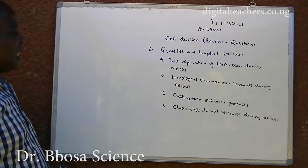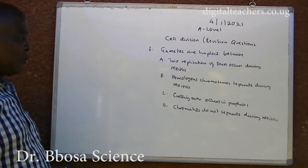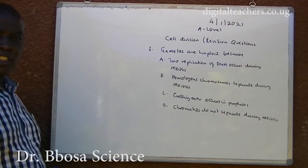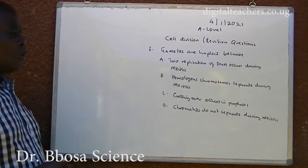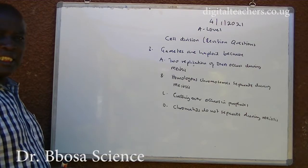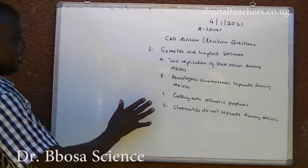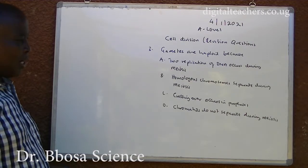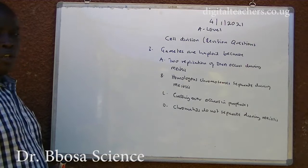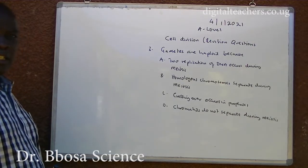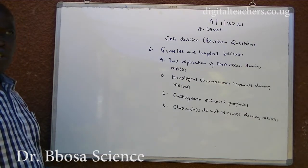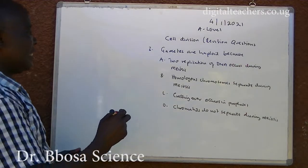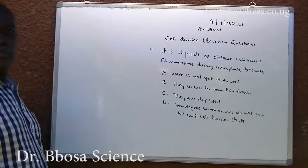Number 3. Gametes are haploid because: A. Two replications of DNA occur during meiosis. B. Homologous chromosomes separate during meiosis. C. Crossing over occurs in prophase 1. D. Chromatids do not separate during meiosis. You can pause and answer. The answer is B.